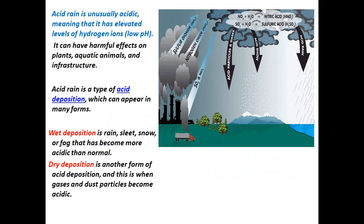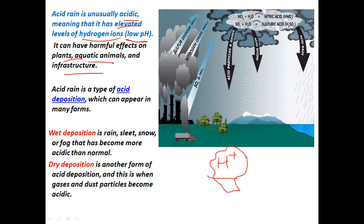Acid rain is unusually acidic, meaning it has elevated levels of hydrogen ions — H⁺ ions. As you may have studied in chemistry, any substance with a higher concentration of H⁺ ions is acidic, or we can say its pH is low. Acid rain can have harmful effects on plants, aquatic animals, and infrastructure.